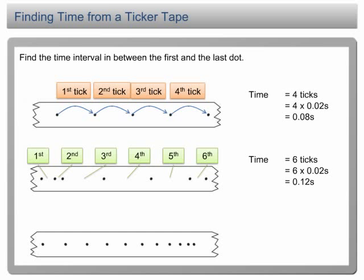Okay, there are 10 dots, right? Therefore, the time taken is 0.02 second times 10 equal to 0.2 second.